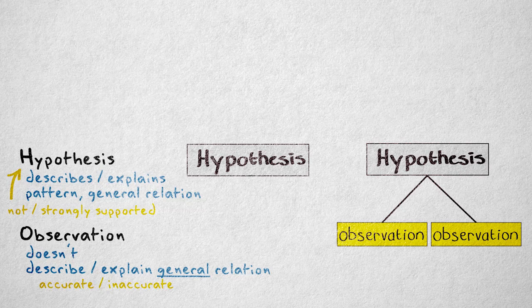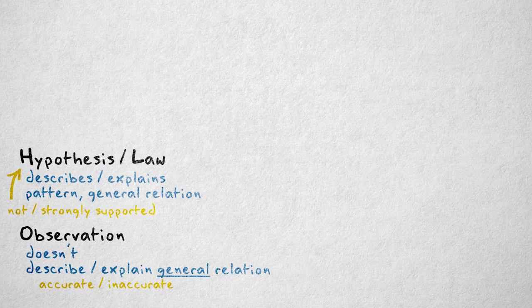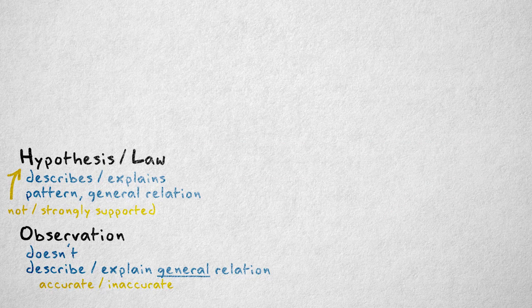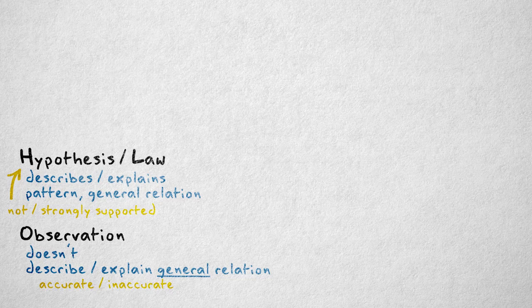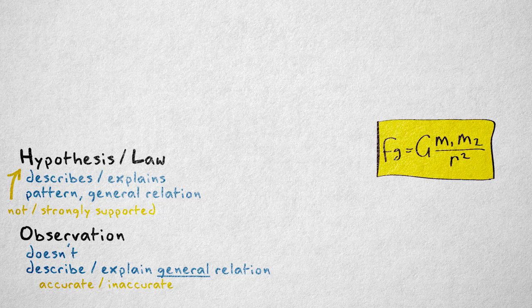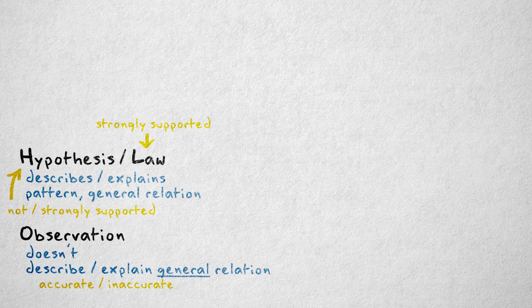A special type of hypothesis is a law. Laws are very precise descriptions of relations or patterns. So precise that they're usually expressed as mathematical equations. They're also generally very well substantiated. That's how they got so precise.